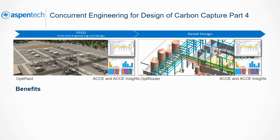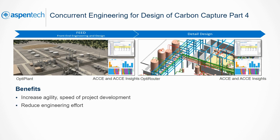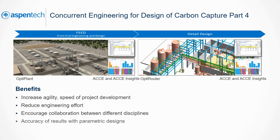It also allows seamless handoffs for detailed design or design evolution with different industry standard applications. As part of the Concurrent Engineering Solution, the benefits of an accurate layout design for different engineering disciplines at an early stage are as follows: we can increase agility and speed of project development and reduce engineering effort; enforce collaboration between process, mechanical, piping, costing, and layout engineering; and improve the accuracy, reliability, and speed of cost estimation earlier in the lifecycle.